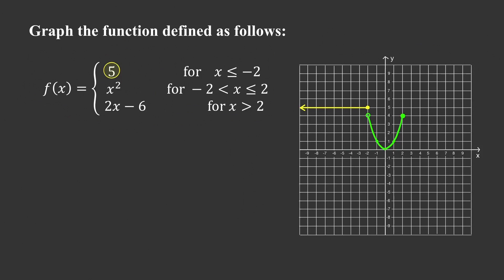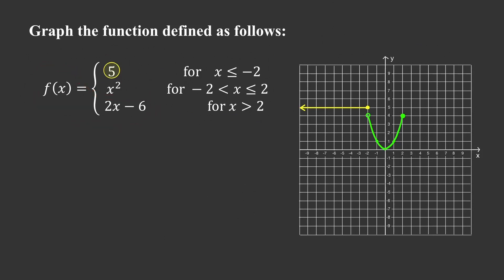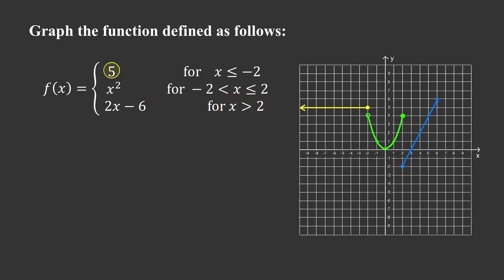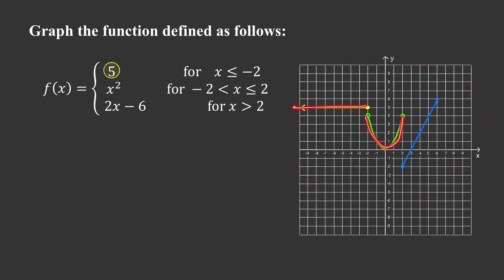For the last piece — a line — we plot two points and draw the line through them. At x equals 2, we get 2 times 2 minus 6, which is negative 2, but we use an open dot since x equals 2 is not in this formula's domain. At x equals 3 we get 0, giving the x-intercept. The graph of f consists of three pieces: a ray, part of a parabola, and another ray.